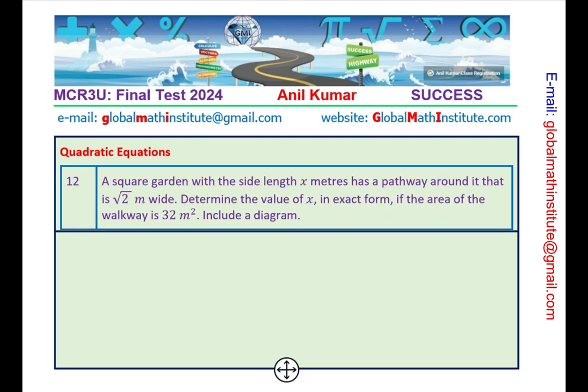Question number 12. A square garden with side lengths x in meters has a pathway around it that is √2 meters wide. Determine the value of x in exact form if the area of the walkway is 32 meters square. Include a diagram. Again, the skills which you have learned, working with the radicals is key in answering many of the questions which will come in your final exam. So, review those skills.